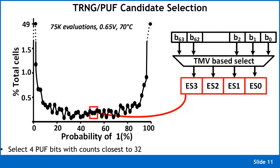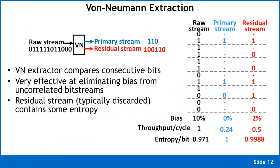We call individual bits 'entropy sources' rather than PUF cells, since they can function as either PUFs or TRNGs. We find the four best TRNG cells and then use a hierarchical entropy extractor. The technique we go back to is a classic extractor proposed by von Neumann — a simple circuit that compares consecutive bits from a raw bit stream.